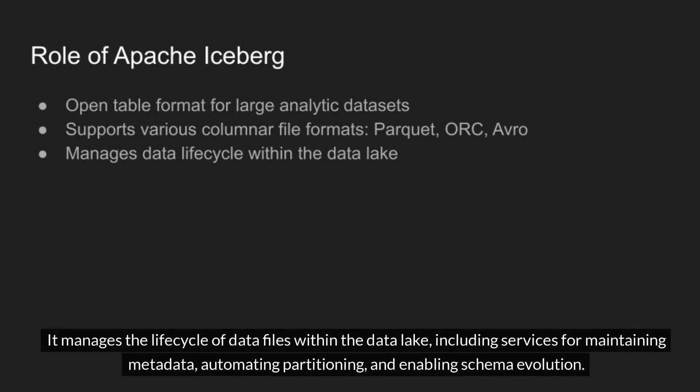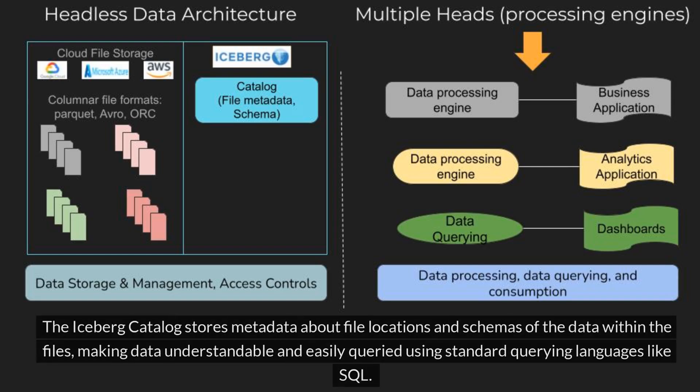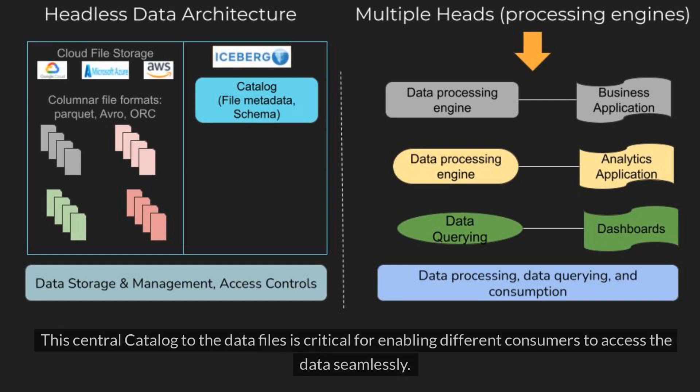It manages the lifecycle of data files within the data lake, including services for maintaining metadata, automating partitioning, and enabling schema evolution. The Iceberg catalog stores metadata about file locations and schemas of the data within the files, making data understandable and easily queried using standard querying languages like SQL. This central catalog to the data files is critical for enabling different consumers to access the data seamlessly.